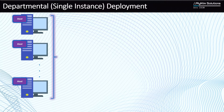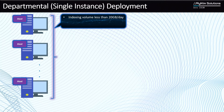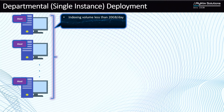Let's start with the single instance or departmental deployment. The first characteristic is the indexing volume. For this kind of deployment, you need to have an indexing volume of less than 20 gigabytes per day. So if you've looked at all the data that you have and you think that in a day you're going to be ingesting something less than 20 gigabytes, you start thinking about this kind of departmental deployment.